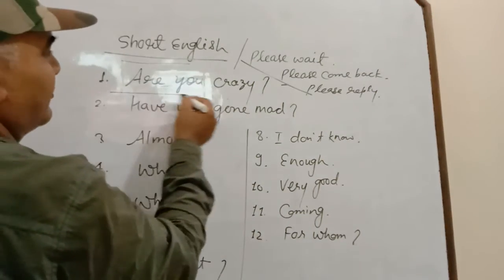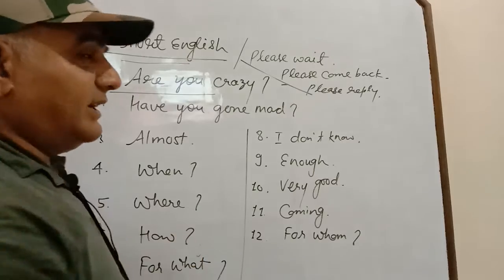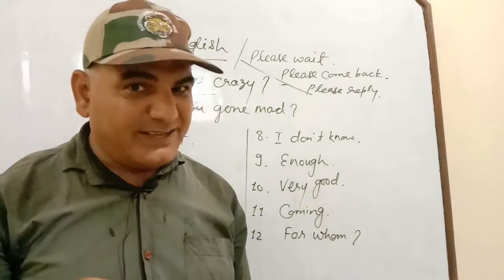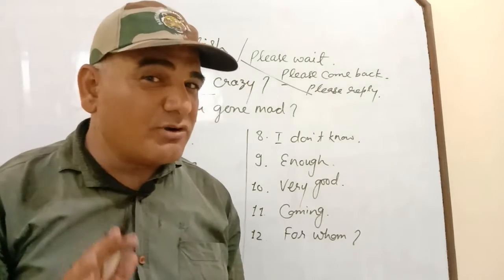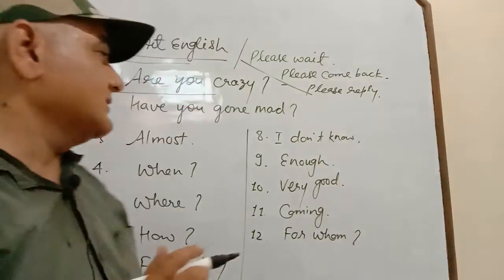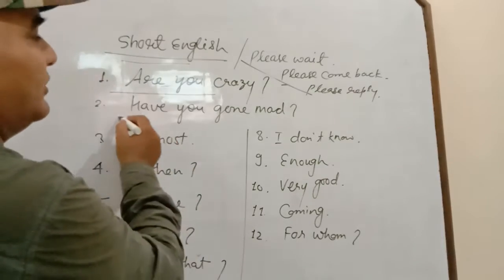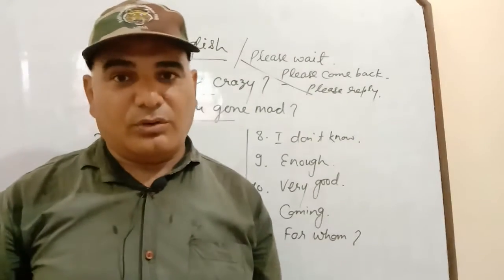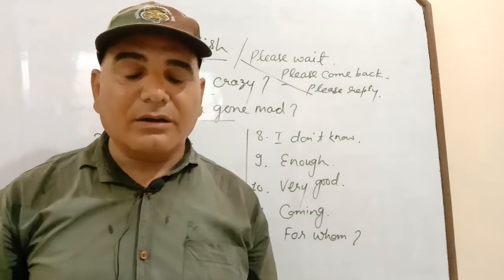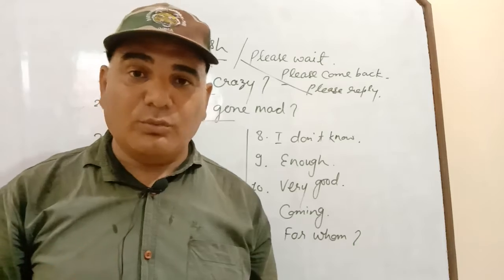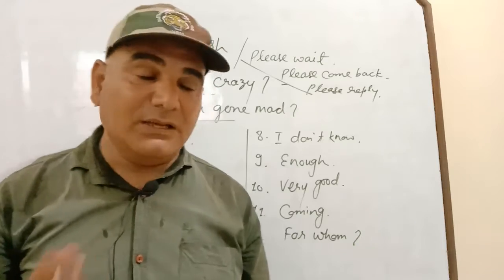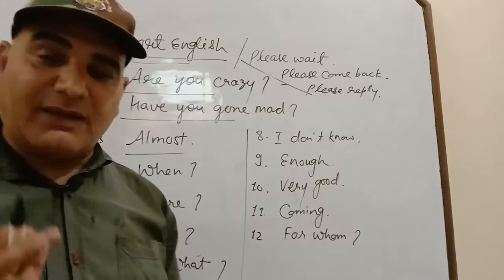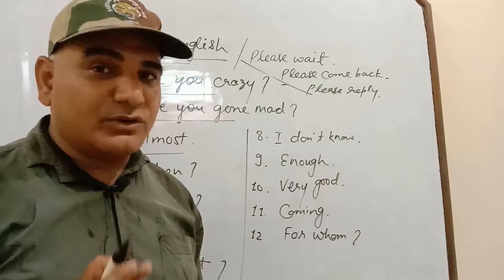The first sentence I have written is 'are you crazy.' We can say 'crazy' — what are you doing? Nowadays this kind of craziness has come. 'Have you gone mad?' It may be that some people are going mad — they have something to do but they are doing a different thing.